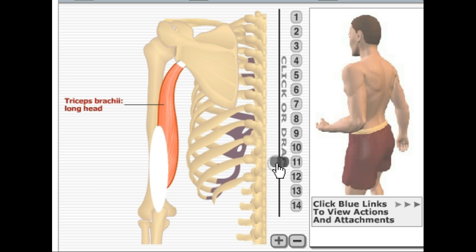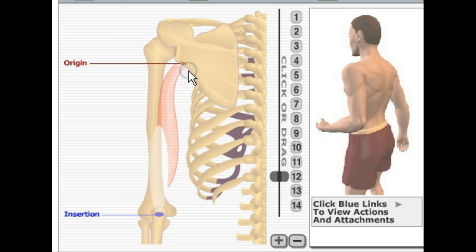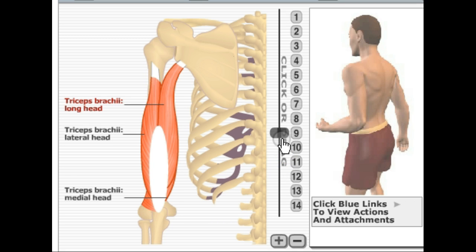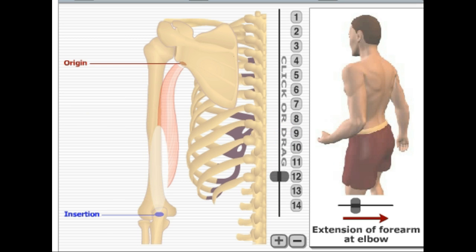Here we have the triceps, named triceps because there are three heads: the long head, the lateral head, and the medial head. The long head originates in the infraglenoid tubercle of the scapula and inserts on the olecranon process of the ulna. The medial head originates in the lower half of the humerus and also inserts on the olecranon process of the ulna. The lateral head originates in the upper third of the humerus and inserts on the olecranon process of the ulna. All three heads extend the forearm at the elbow.